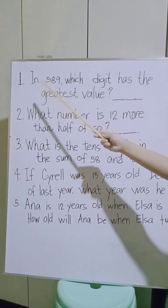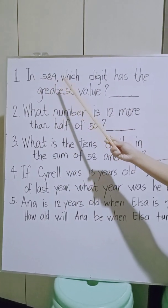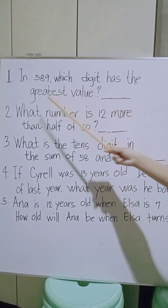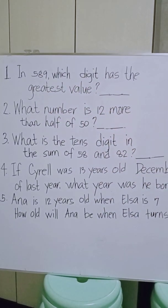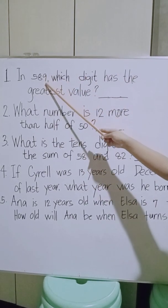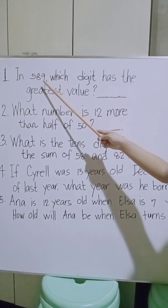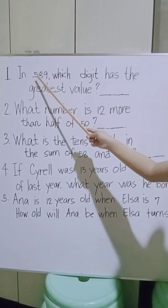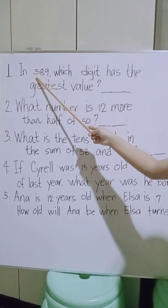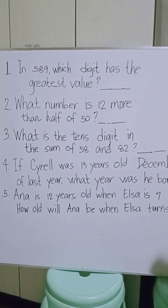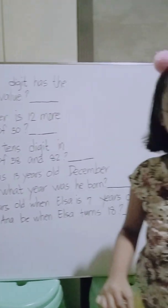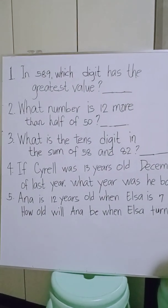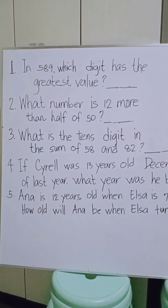Number 1. In 589, which digit has the greatest value? The value of 9 is 9. The value of 8 is 80. The value of 5 is 500. So 5 is the greatest digit, because its value is 500.